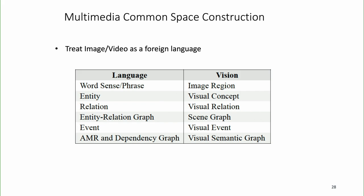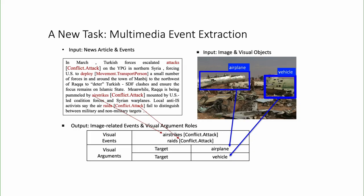The idea is to still consider image and video as a foreign language — we know we're missing a lot but this is a starting point. We build alignment between multiple levels. We need scene graph parsing and align that graph with the entity extraction graph. We also apply visual semantic graph parsing and align that with the dependency graph and AMR graph. By doing this, you can take a multimedia document as input and generate a knowledge base or event database by pulling information from both images and text. In the text you don't see anything talking about the targets, but the image clearly shows the airplane and vehicle as targets.